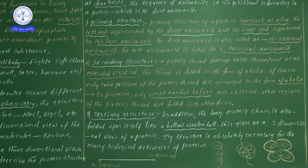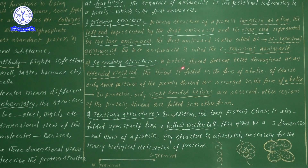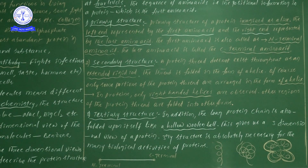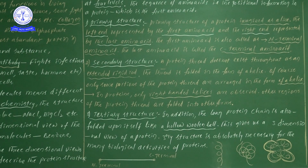If you take one protein as one line or thread, it will not be like a thread all the time. The thread is folded in the form of a helix. So what we consider as a thread-like primary structure — in the secondary structure point of view, it will be folded and form a helix.